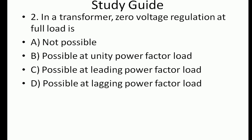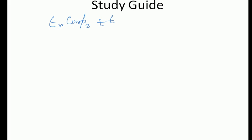Next question: in a transformer, zero voltage regulation at full load — is it possible? The four options are: not possible; possible at unity power factor load; possible at leading power factor load; possible at lagging power factor load. The formula for transformer voltage regulation is: E_r cos φ₂ plus E_x sin φ₂.